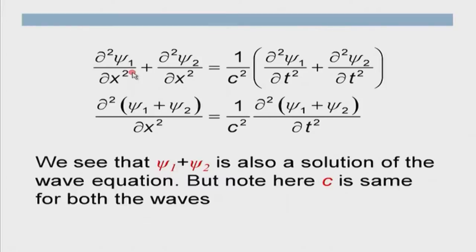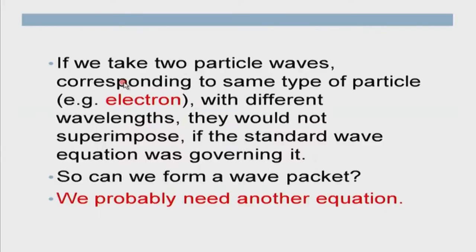So if psi 1 represents a particle of a particular wavelength and psi 2 represents a particle of a slightly different wavelength, then psi 1 plus psi 2 will not be a solution. If this equation were to govern the wave nature of the particle, this equation would not be good enough. We are trying to assemble our ideas to come to an equation likely to represent the wave nature of a particle. Since electrons of different wavelengths would not superimpose under this standard equation, we definitely need another equation.